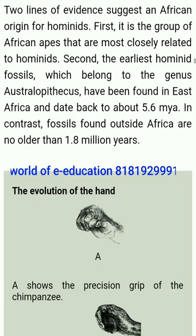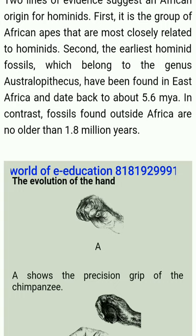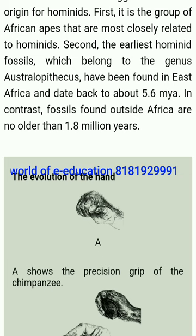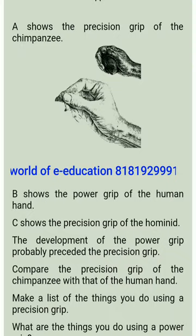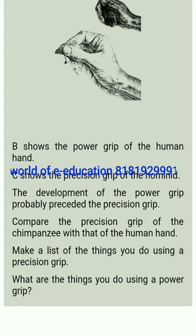Two lines of evidence suggest an African origin for hominids. First, it is the group of African apes that are most closely related to hominids. Second, the earliest hominid fossils, which belong to the genus Australopithecus, have been found in East Africa and date back to about 5.6 million years ago. In contrast, fossils found outside Africa are no older than 1.8 million years. The evolution of the hand: A shows the precision grip of the chimpanzee, B shows the power grip of the human hand, and C shows the precision grip of the hominid. Development of the power grip probably preceded the precision grip.